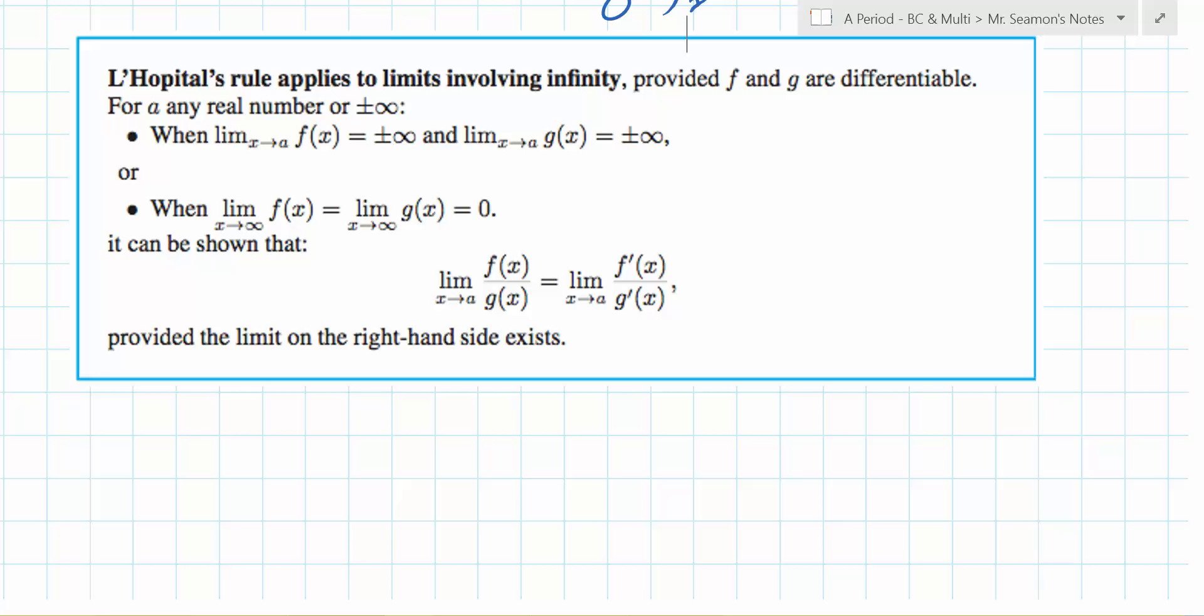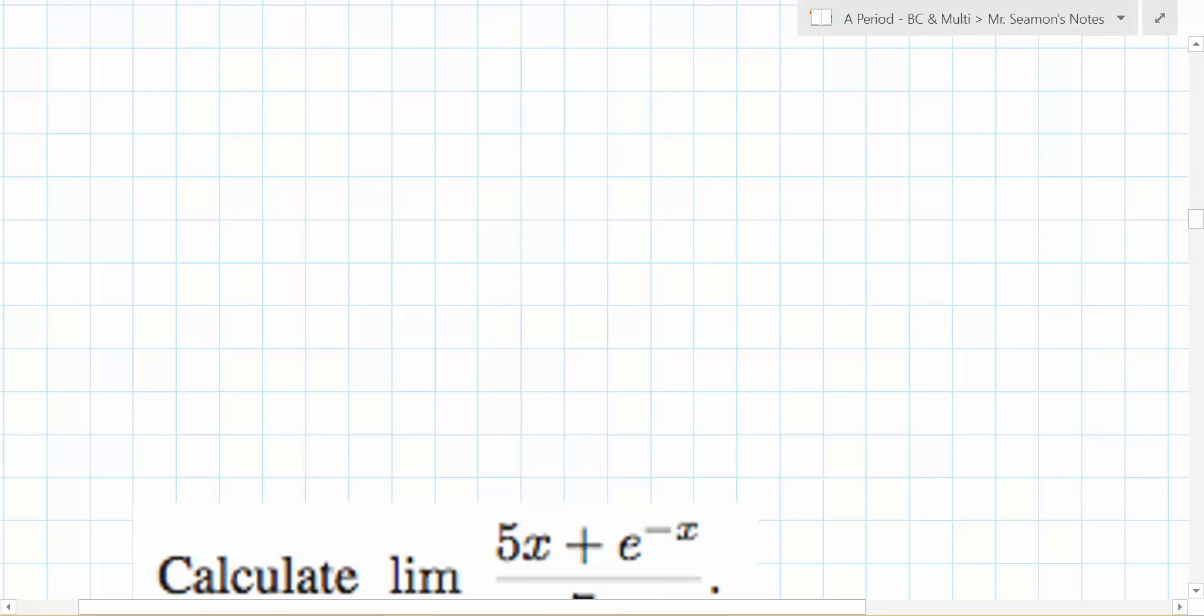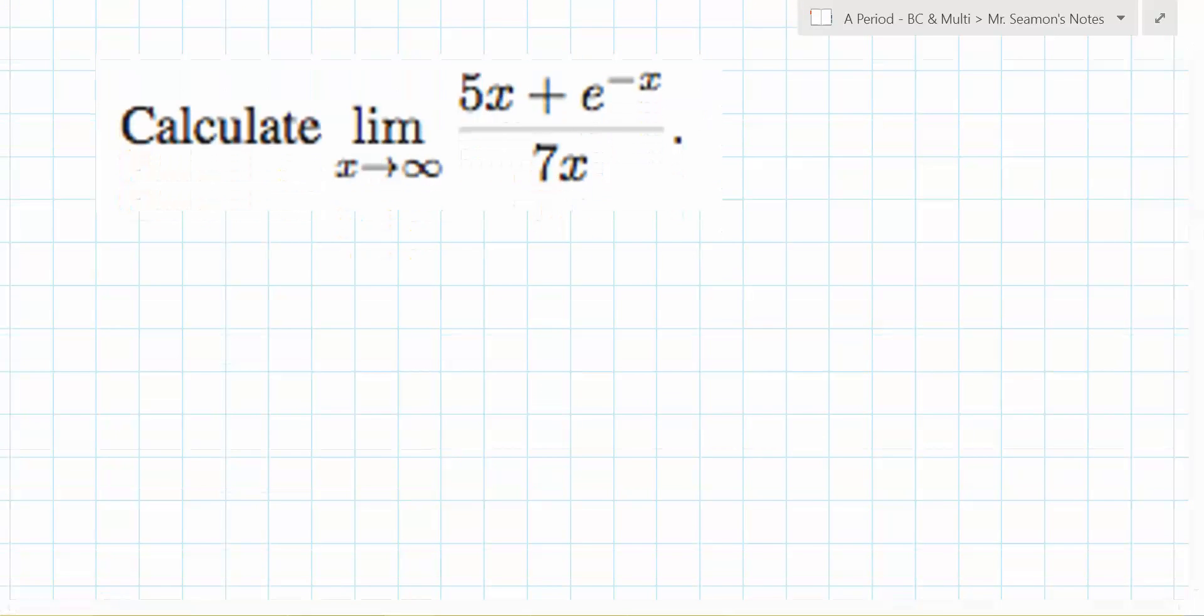So let's do a warm-up here. Don't write anything down. I just want you to stare at this. And when you have an answer to this, raise your hand. Stare at this. Negative x as x goes to infinity. Zero. And then you're 5x over 7x, which goes to 5 7ths. So don't freak out and always use L'Opital's rule.